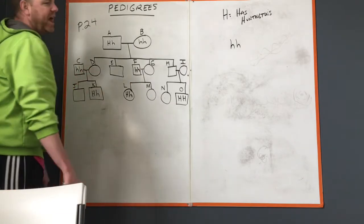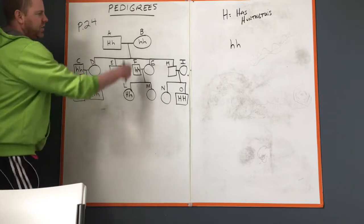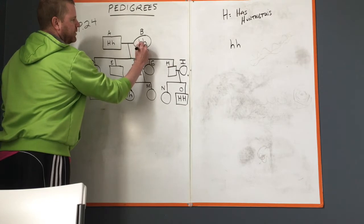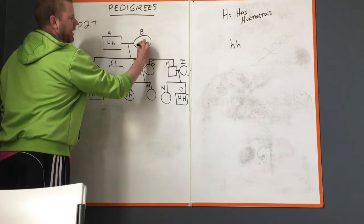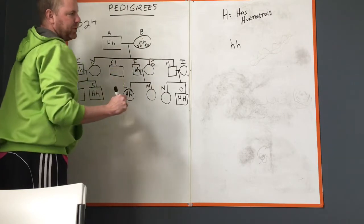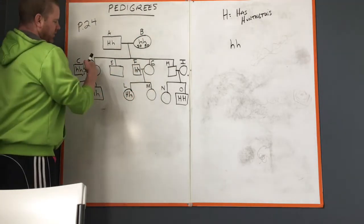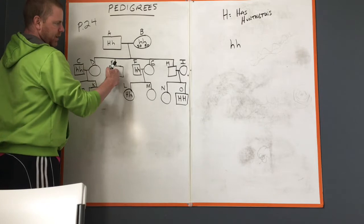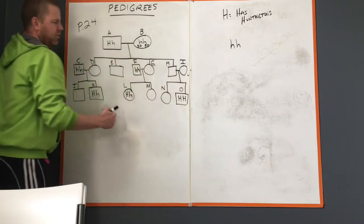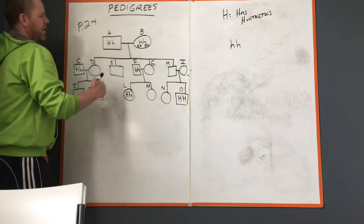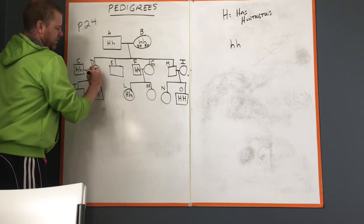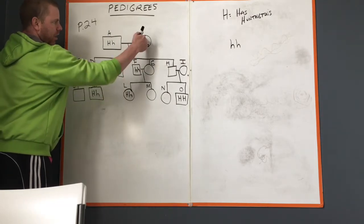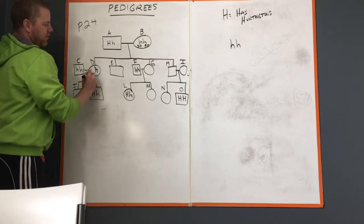This individual B is going to give 50 percent big H and 50 percent little h when that person does meiosis. Since this is directly their kid, you can see the lines here say girl, boy, girl, boy. No matter what, individual D would have gotten a little h from the mom. So then we've got to figure out what this other thing is.